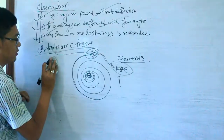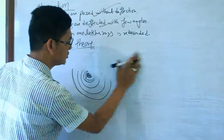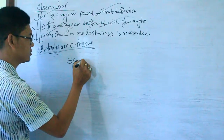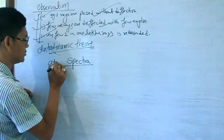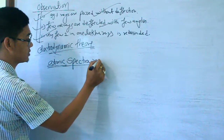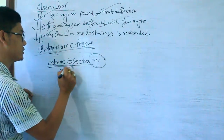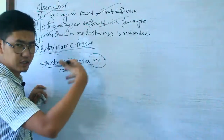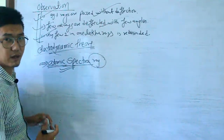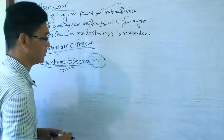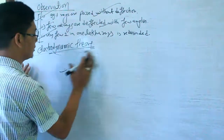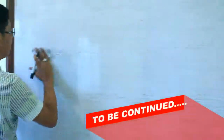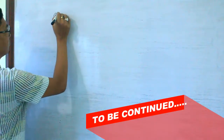Another limitation is the atomic spectra. Rutherford's model cannot explain why atoms emit atomic spectra.